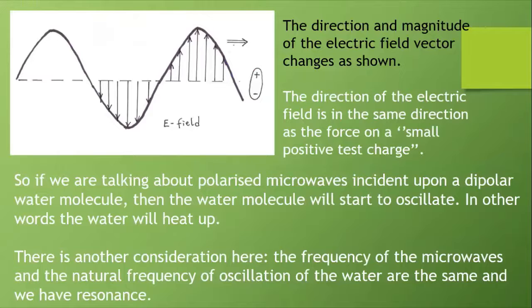My diagram here shows the direction and magnitude of the electric field vector as it's changing. The direction of the electric field vector is in the same direction as the force on a small positive test charge. You'll do something about electric fields later in your course.